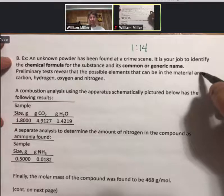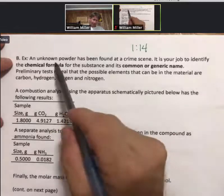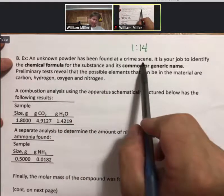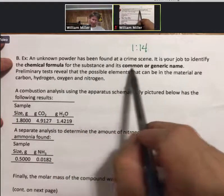Okay, so here's another combustion analysis problem. This is about as complicated as they get. Again, we have an unknown powder. It's been found at a crime scene. It is your job to identify the chemical formula for the substance and its common or generic name.